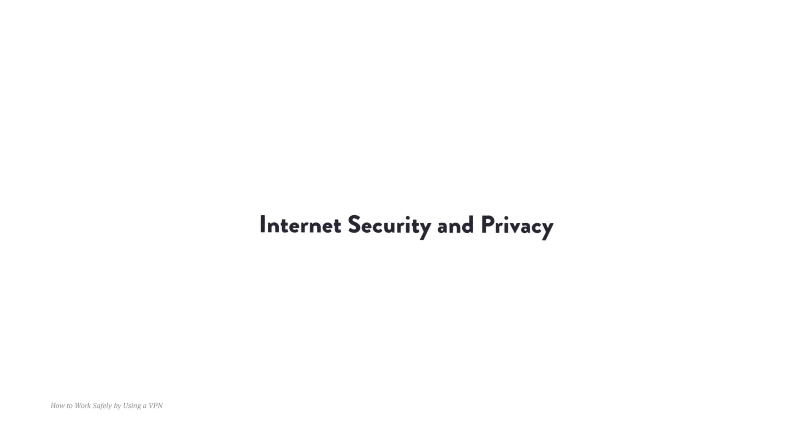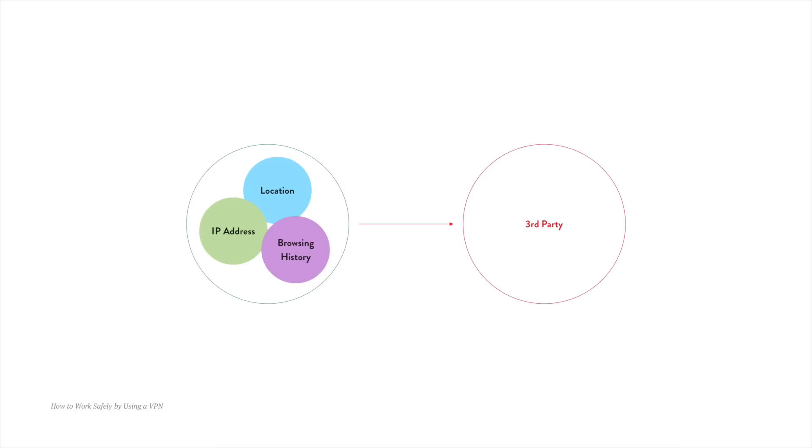Let's begin by briefly discussing internet security and privacy. We now live in an age where our online privacy is almost non-existent. We're being tracked everywhere and we're being presented with ads that are relevant to our browsing history. Did you ever search something on Google and then go to Facebook and see relevant ads to what you searched? That happens because our online activity is being tracked and that data is being given or sold to third parties for marketing purposes. And included in this data is your location and IP address.